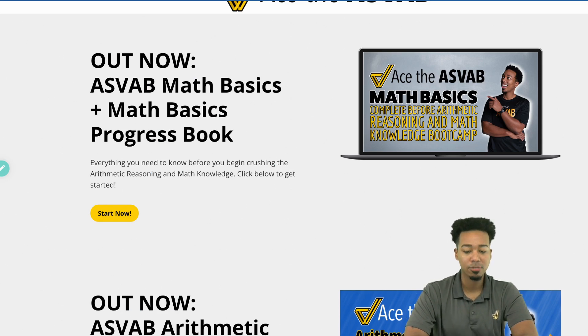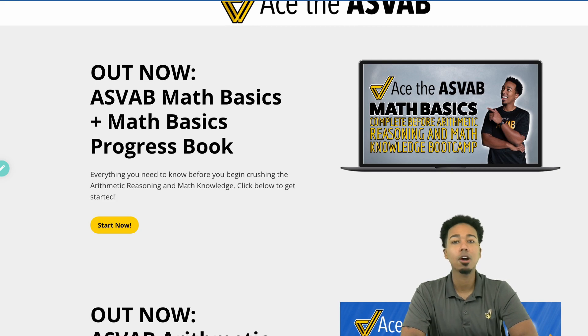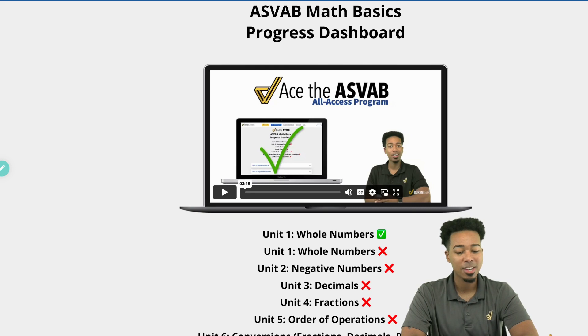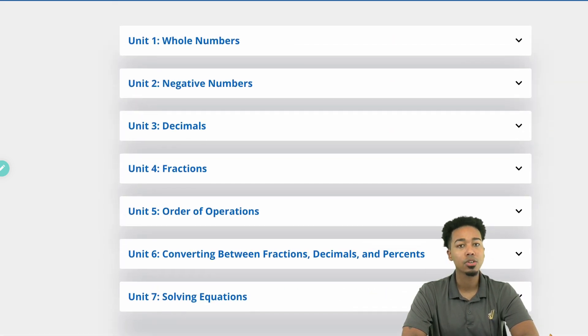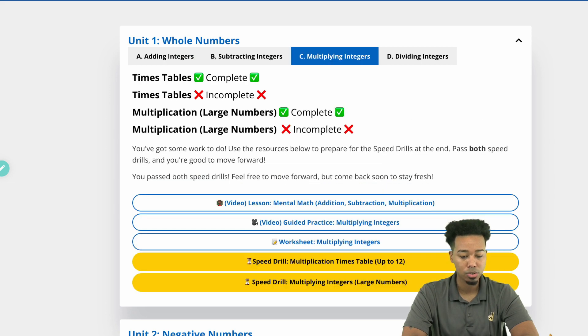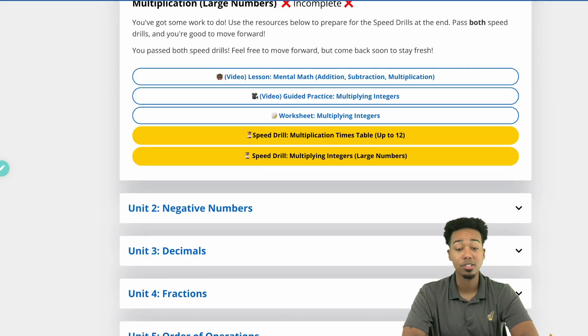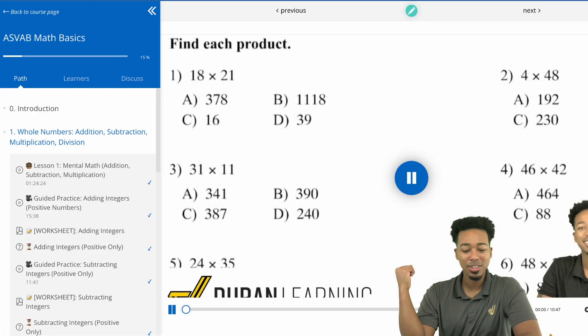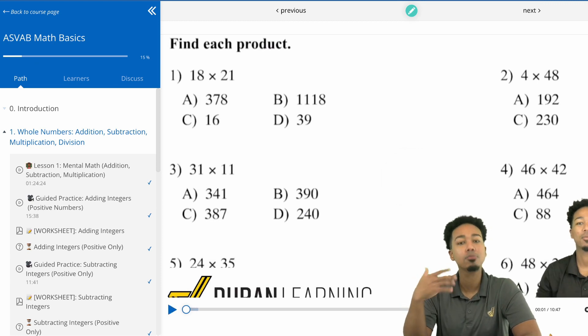So if you're in my ASVAB All Access program, when you sign into the website, I just released our math basics progress book with the brand new math basics course. If you take a look right over here, you'll have your math basics dashboard on how to use it, all that good stuff, nice and easy. You'll want to scroll down and practice your ability to multiply and divide numbers. You'll go right over here into whole numbers practice and go to multiplying integers. You can watch video lessons, worksheets, guided practice videos, all of it, just like this right behind me that pops right up. And you get to practice your calculation skills and speed drills to make sure that you're ready to go all the way.